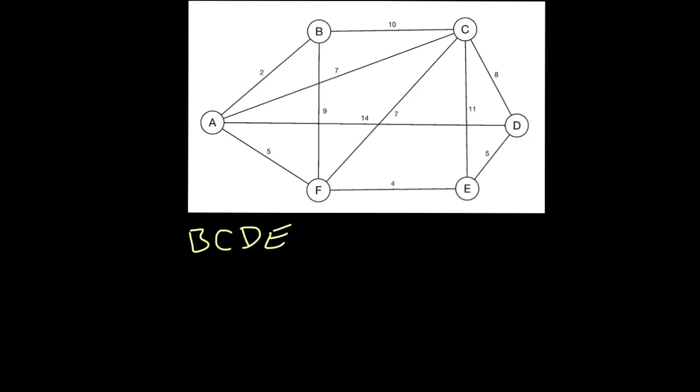We then look at the different ways we could pair these four nodes up. We could put B with C and D with E, we could put B with D and C with E, and we could put B with E and C with D. There's no other combinations that we could have.